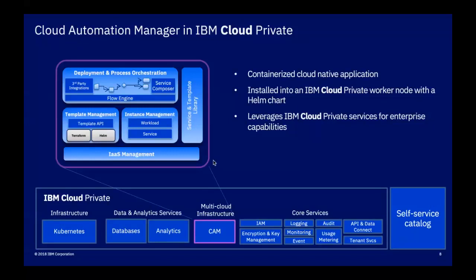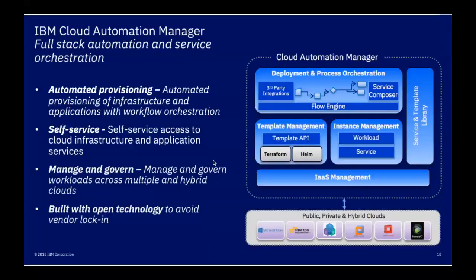If we look at where CAM sits within IBM Cloud, it's the multi-cloud infrastructure support layer. We've got IBM Cloud Private at the bottom, our core services, Kubernetes infrastructure, and the self-service catalog that ICP already has. CAM is one of those self-service catalog items delivered through a Helm chart. It delivers the items at the top of the stack, leveraging IBM Cloud Private for those services. On the right side we can see the service and template library — how we create templates and services, manage those through the template management section of CAM. It uses Helm charts from ICP for containerized deployments or Terraform charts for non-ICP environments.